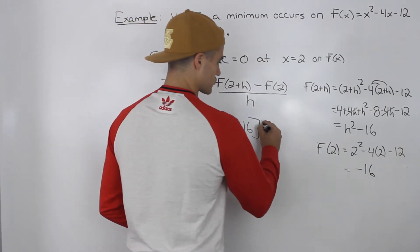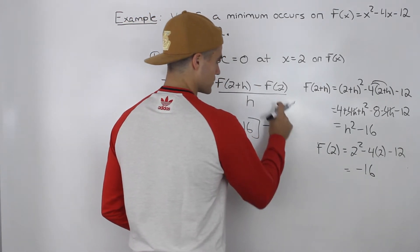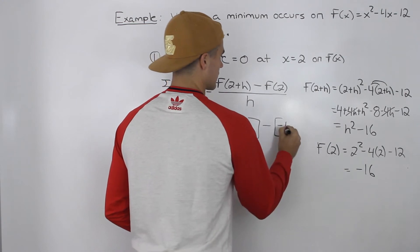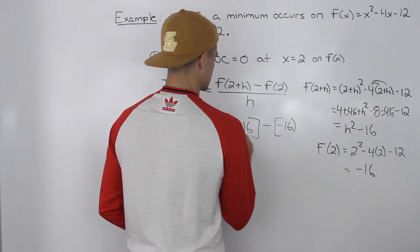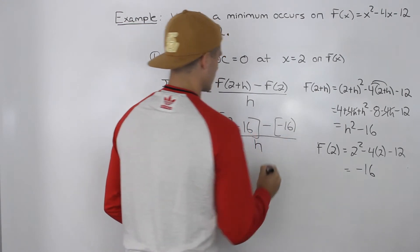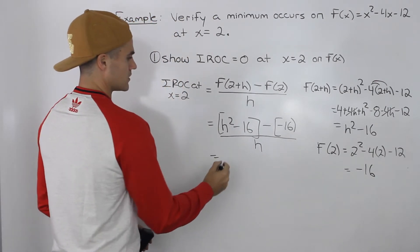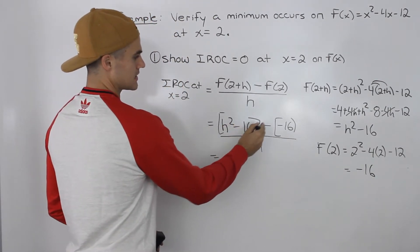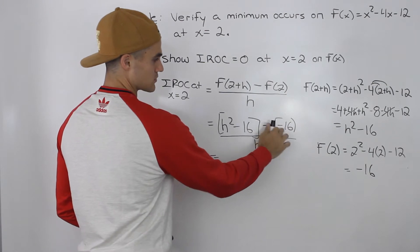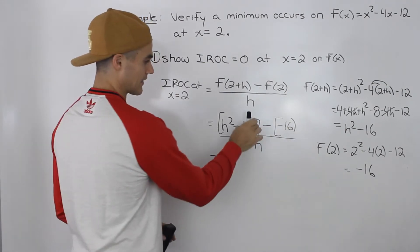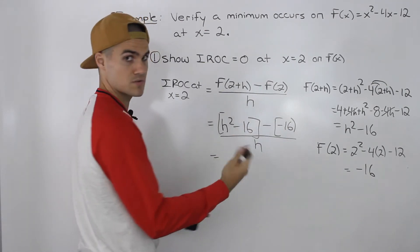So we would be subtracting f(2) and f(2) is -16. This is still going to be all over h. So h² - 16 minus negative 16. Notice how this would turn into positive 16, and then -16 + 16, those would net out to 0.